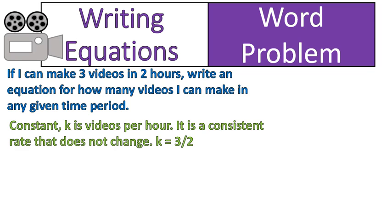The constant, k, is the videos per hour. It's a constant rate, it does not change. Every two hours, I'm making three videos. So it's three videos per two hours. And the way we would write that is three over two as a fraction.